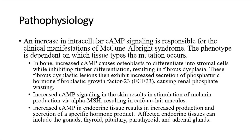The phenotype is dependent on which tissue types the mutation occurs. In bone, increased cAMP causes osteoblasts to differentiate into stromal cells while inhibiting further differentiation, resulting in fibrous dysplasia. These fibrous dysplastic lesions then exhibit increased secretion of phosphaturic hormone fibroblastic growth factor 23, causing renal phosphate wasting.